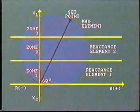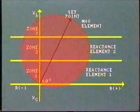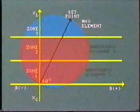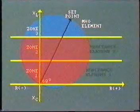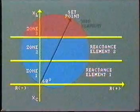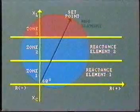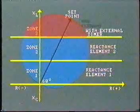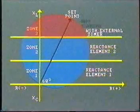The characteristic is shown on this diagram. There are two reactance elements, each protecting first and second zones. The circle diagram for the Mho element shows that it is set to protect the third zone. It includes an external timer to prevent early tripping.